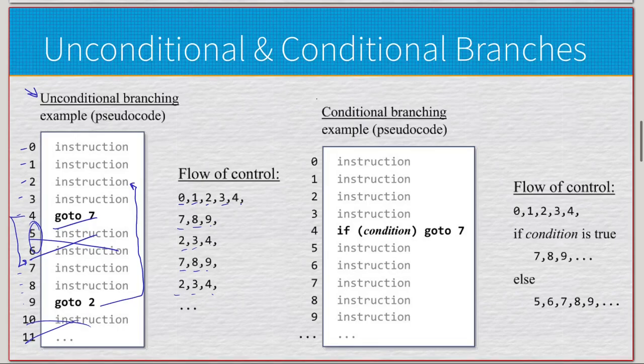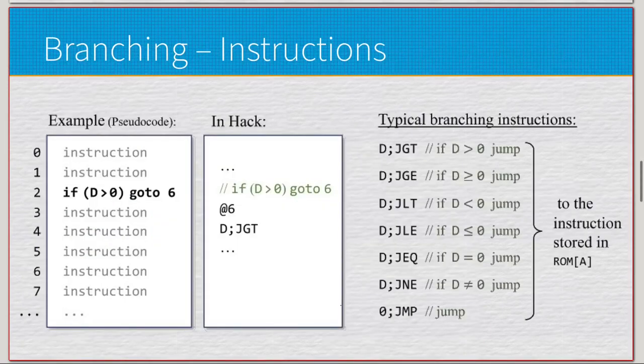To get around that, we have the idea of conditional branches. Flow control is zero, one, two, three, four, just like last time. We now have if condition go to seven, so we have to have some condition. If the condition is true, then we do seven, eight, nine. Otherwise, we just fall through and keep on iterating - five, six, seven, eight, nine, and so forth. This is where the actual setup for how these are going to work is.